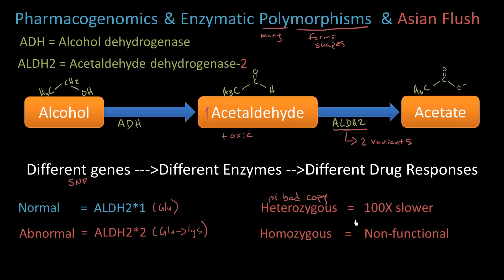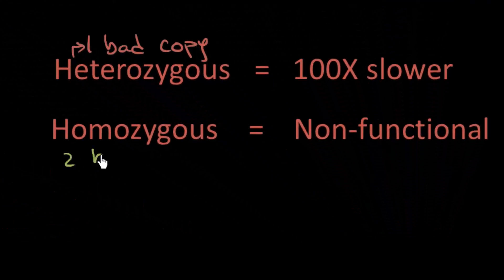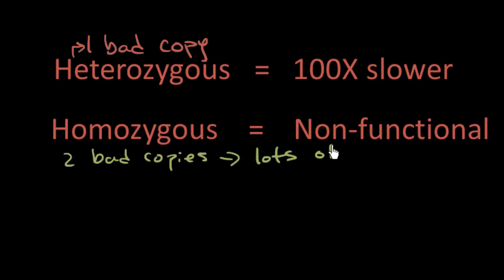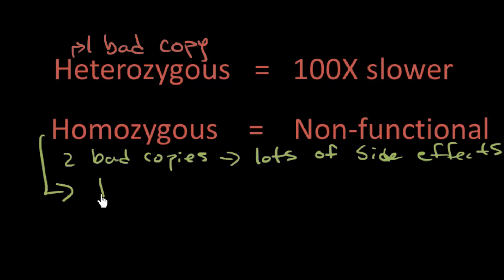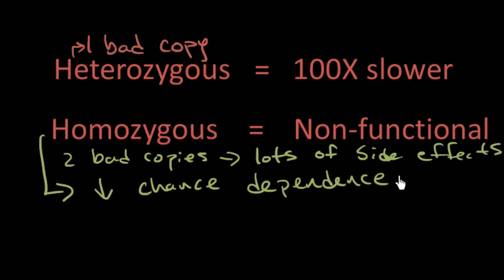Here's how this relates clinically. If you're homozygous — two bad copies — you're getting lots of side effects. As a result, these people actually have a decreased chance of alcohol dependence. Studies have shown that the rate of alcohol abuse in people with two bad copies is much lower because they immediately get that flushing. It's embarrassing and they experience much more severe side effects.